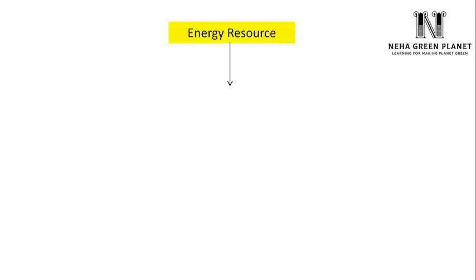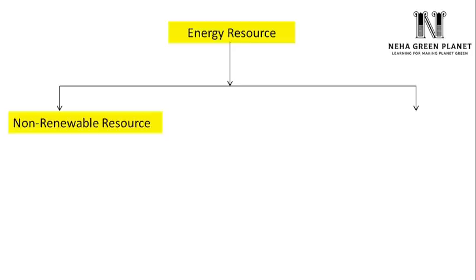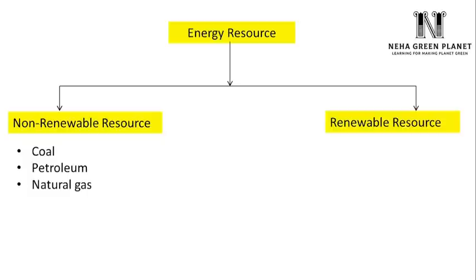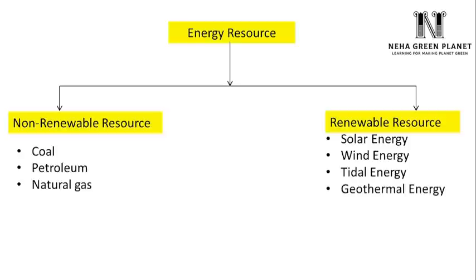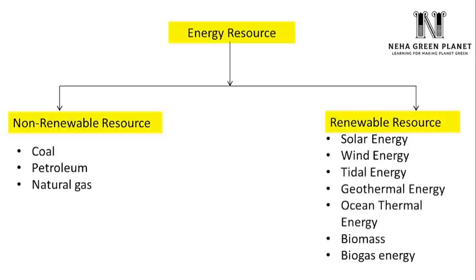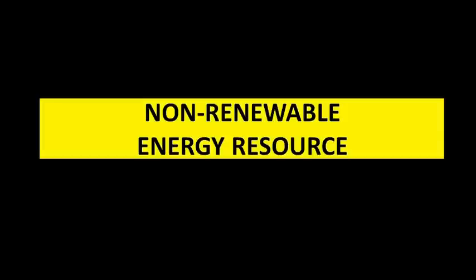Energy resources are used to generate electricity and other forms of power, which are crucial for human use. Broadly, energy resources are of two types. First, non-renewable energy resources, which are limited in amount and may get exhausted in future — for example, coal, petroleum, and natural gas. On the other hand, renewable resources are those present in unlimited amounts and can be replenished again and again — for example, solar, wind, tidal, geothermal, ocean thermal, biomass, biogas, and hydropower.